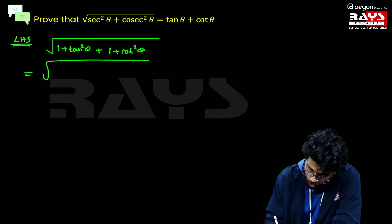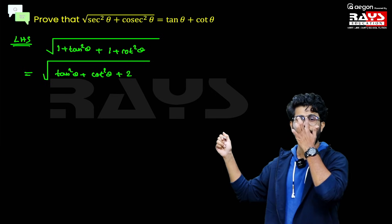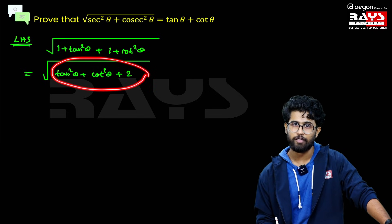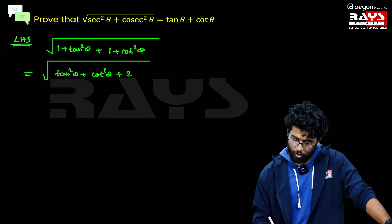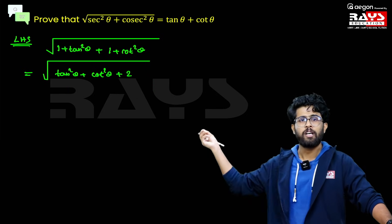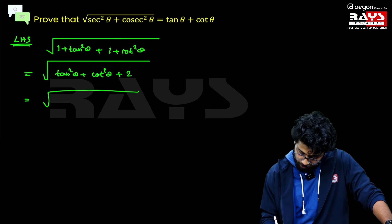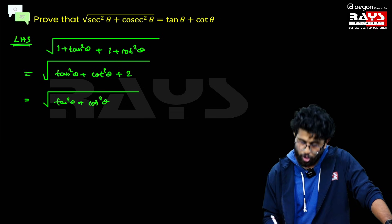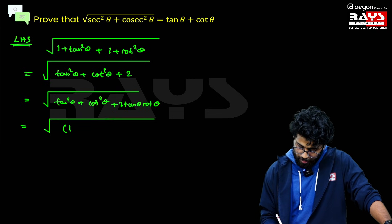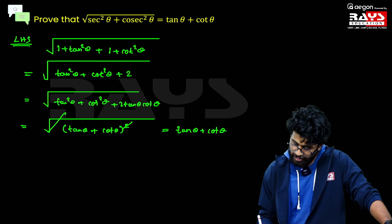Adding both, we get the square root of (tan²θ + cot²θ + 2). Now the important step: since tan θ × cot θ = 1, we can write 2 as 2·tan θ·cot θ. So we have the square root of (tan²θ + cot²θ + 2·tan θ·cot θ), which is the square root of (tan θ + cot θ)². Now we can cancel the square and root, leaving us with tan θ + cot θ, which is our RHS. Happily proved.